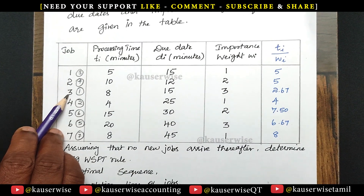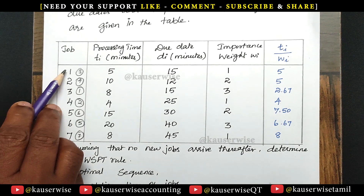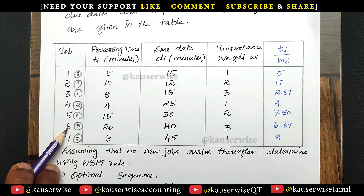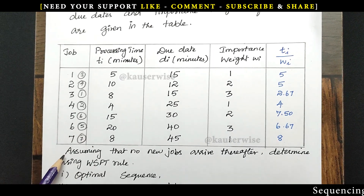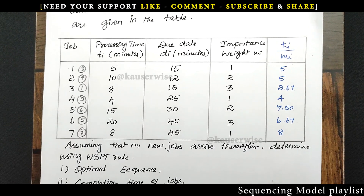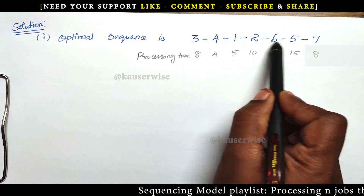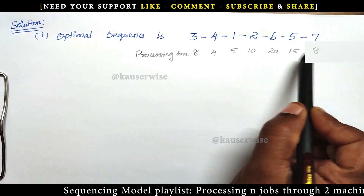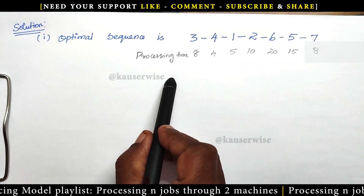The optimal sequence according to the WSPT rule is: job 3, job 4, job 1, job 2, job 6, job 5, and finally job 7. The processing times for the respective jobs have been written in order to carry out the next calculation.